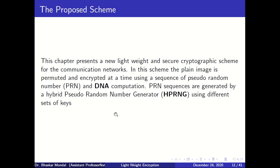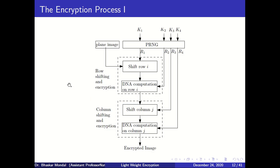The encryption algorithm uses a pseudorandom number generator — basically the logistic map — with different sets of keys for different purposes. We have a plain image. We generate a pseudorandom sequence R1 used to shift the rows of the image. Then another sequence R2 is generated, converted to DNA, and added to give a cipher image. In the first round, rows are shifted and pixel values in each row are encrypted using DNA computation.